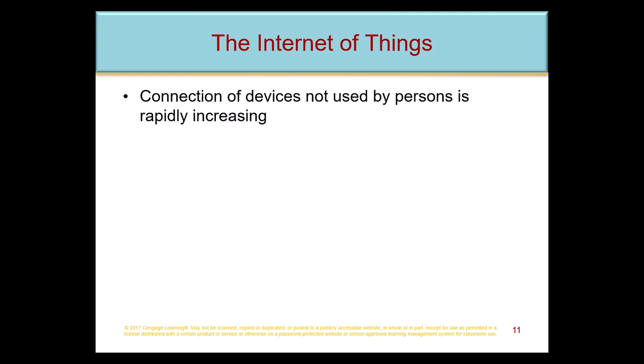For example, Samsung makes a refrigerator that will send you a text message saying to pick up milk on your way home because it senses the milk jug is nearly empty. We have thermostats and other devices communicating using internet protocol. Classic examples are Alexa and similar devices — they are talking to other devices independent of human interaction. It's exploding at a phenomenal rate, and there are a whole host of issues we are not dealing with proactively.